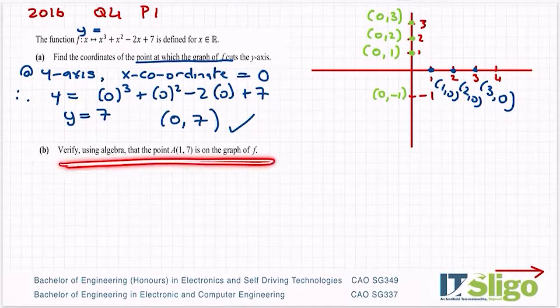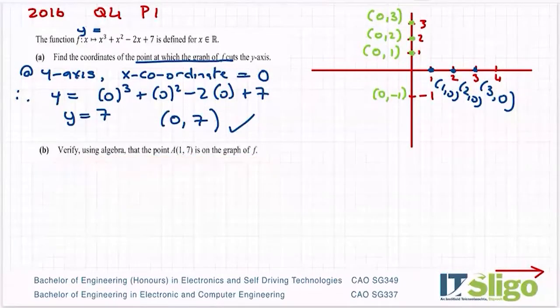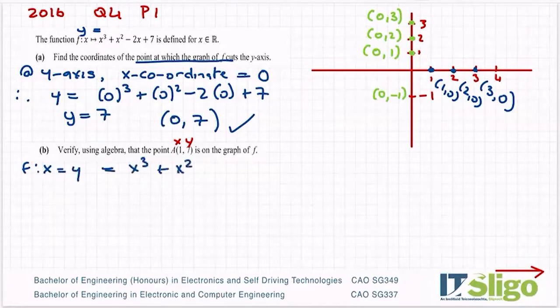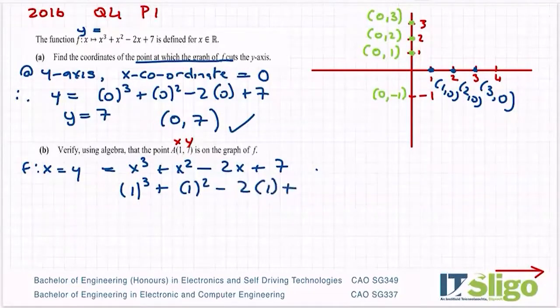Verify using algebra that the point is on the graph. So label the point x comma y just like you would any point. This is how you verify a point is on a line, it's the same method we use to verify a point is on a circle or anything like that. So f(x), which is y, is equal to x³ + x² - 2x + 7. So let's sub in our point. So our x is 1³ + 1² - 2 times 1 + 7, and that should be equal to my y-coordinate, which is 7, if the point is on the line.